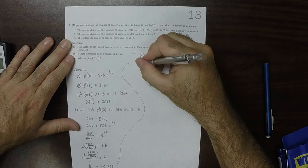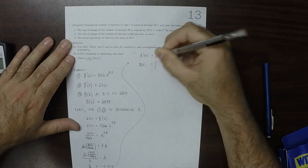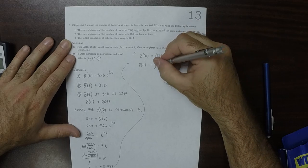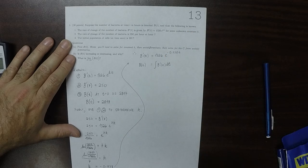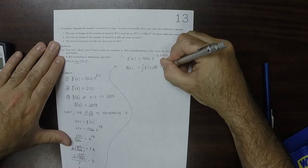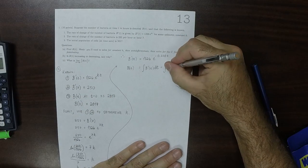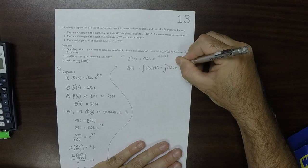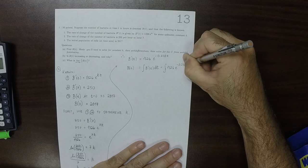We can get the original function B(t) by anti-differentiating the derivative. So we'll anti-differentiate the derivative there. So that would be the anti-derivative of 1,326 exponential of negative 0.238 t dt.